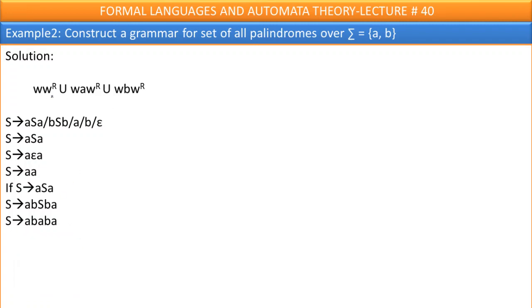W, w power r. W, sigma is a, b means let me say my w is ab. In that case, your w power r must be ba. W, w power r is a palindrome. Isn't it? A, b, b, a from this side, from this side is also a, b, b.